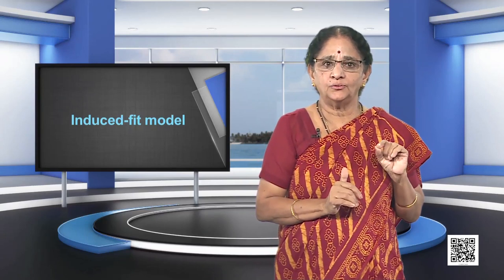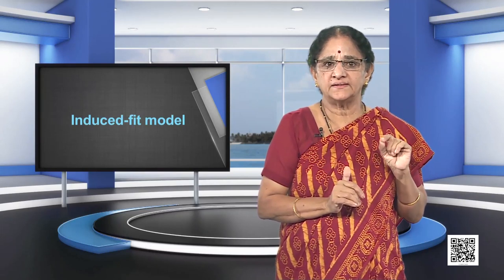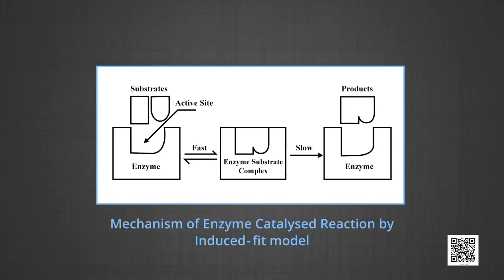Now, the induced fit model: spectroscopic and X-ray crystallographic studies show that when a substrate molecule reaches the active site, the enzyme changes its shape to accommodate the substrate. It is this ability of the enzyme to change its shape that determines whether or not the reaction will take place. According to this model, the substrate induces the active site to change in order to fit the substrate, unlike the rigid lock and key model. It can be imagined as a hand in a glove, in which the glove (the active site) does not get its functional shape until the hand (the substrate) fits into it.